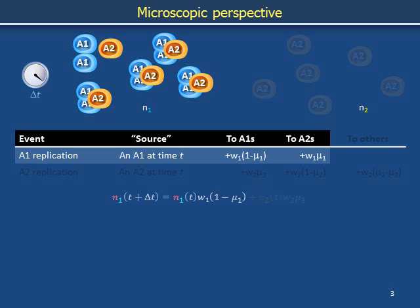In the same way, the portion of the population of cells with allele A2 at time T plus delta T owing to survival and reproduction with mutation of cells initially having allele A1 is the size of the source population N1 of T multiplied by W1 times mu1.